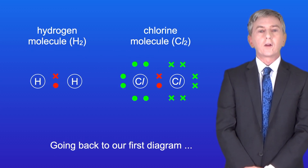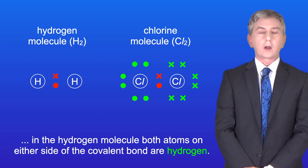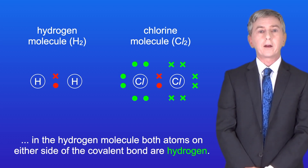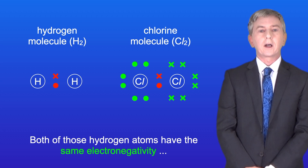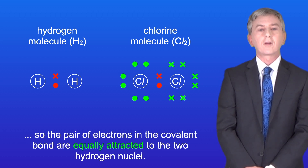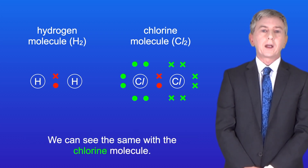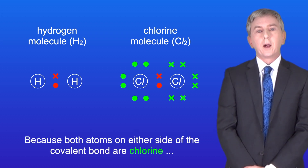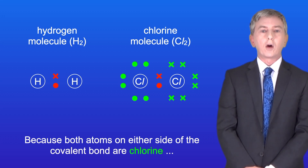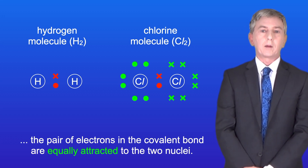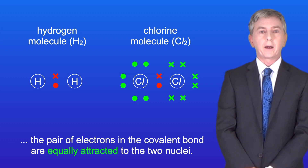Going back to our first diagram: in the hydrogen molecule, both atoms on either side of the covalent bond are hydrogen. Both of these hydrogen atoms have the same electronegativity, so the pair of electrons in the covalent bond are equally attracted to the two hydrogen nuclei. We can see the same with the chlorine molecule — because both atoms are chlorine, the pair of electrons are equally attracted to the two nuclei.